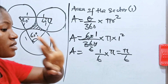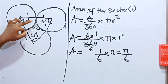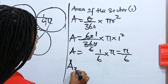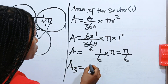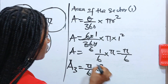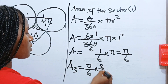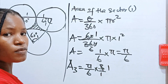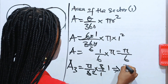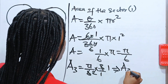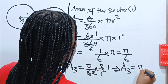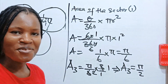We have 3 sectors in total. So the area of the 3 sectors is pi over 6 times 3, which gives us 3pi over 6. Simplifying, 3 divides into 6 to give 2, so the area of the 3 sectors is pi over 2.